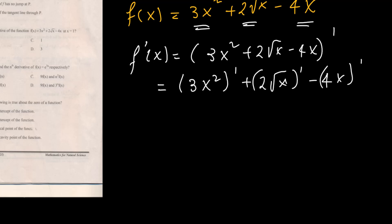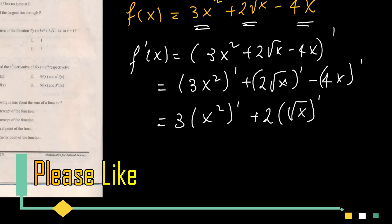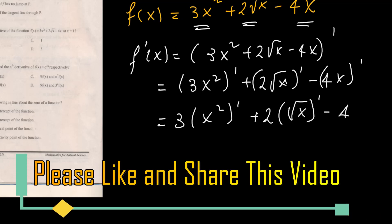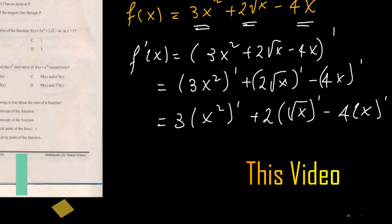For a power function formula we apply, the constant can be taken out. Then this is the derivative of 3 times x squared, plus 2 times the derivative of square root of x, minus 4 times the derivative of just x.